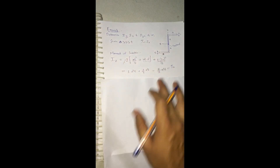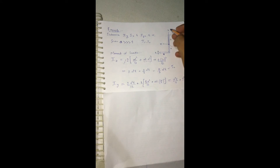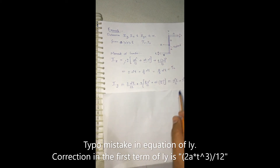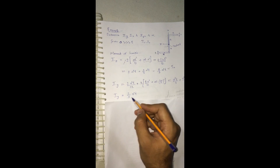Now we find Iy. For the web: 2A·T³/12. For each flange, using the parallel axis theorem with perpendicular distance A/2 from the body centroid: T·A³/12 plus A·T·(A/2)², multiplied by 2 for both flanges. By further resolving, neglecting T³ terms, we find Iy equals 2/3·A³·T.